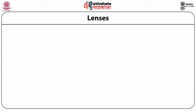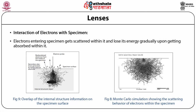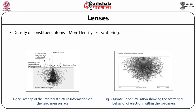Let us now discuss about the interaction of electrons with the specimen. Electrons entering the specimen get scattered within it and lose energy gradually upon being absorbed. Scattering range within the specimen depends upon: the energy of electrons — more energy means more scattering; atomic number Z of the sample — more Z means less scattering; and density of constituent atoms — more density means less scattering. Monte Carlo simulation enables us to understand this phenomenon and shows the scattering behavior of electrons within the specimen.